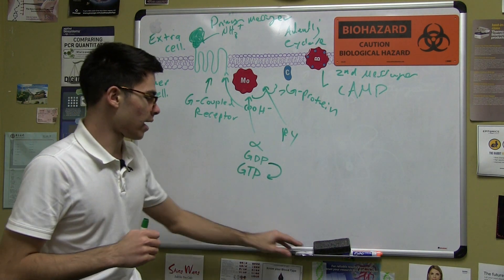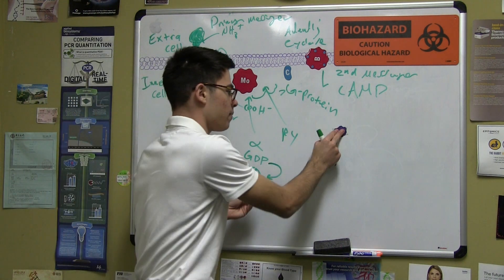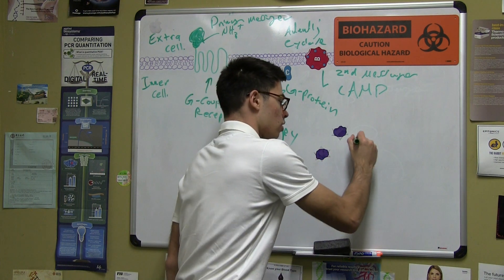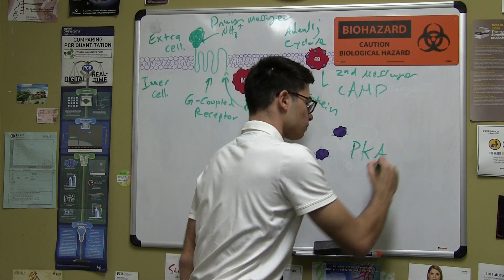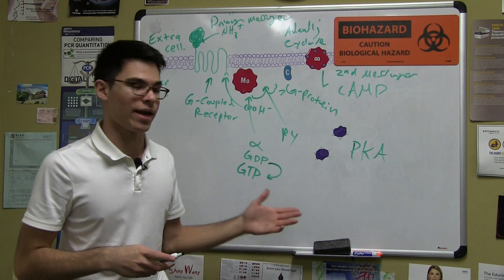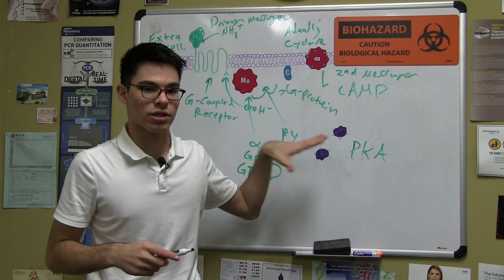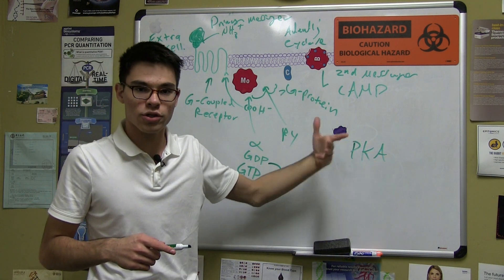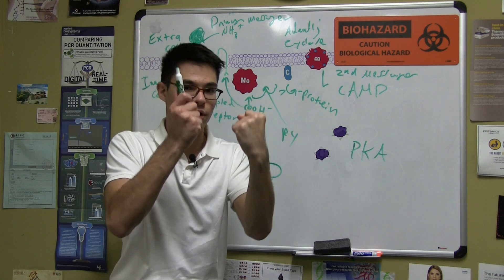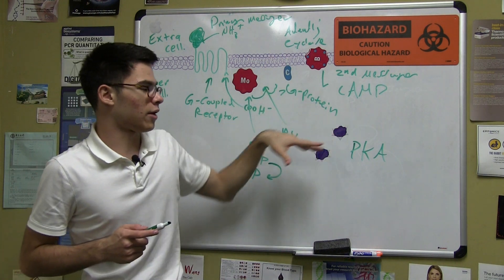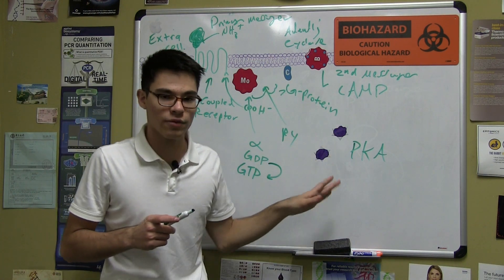So this works by, if you're curious, cyclic AMP will bind to another protein in the cell called PKA and will bind to the regulatory subunit of PKA, activate it, and then allow PKA to cause the breakdown of glycogen and give the muscles sugar so they can be ready to put them up. So this is one way in which cyclic AMP will induce the fight or flight response.